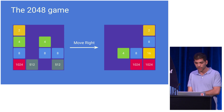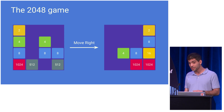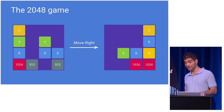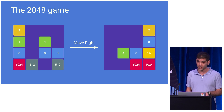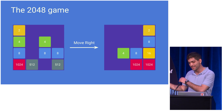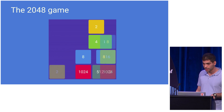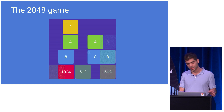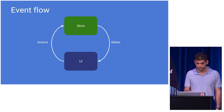I'm going to explain this idea by walking through an example implementation of the 2048 game. Unfortunately, I don't have enough time to explain the game. So if you don't know the game, just remember that the user picks a direction — left, right, up, or down — and all the tiles slide in that direction, and some of them merge. This is how it looks when I swipe right: the tiles slide to the right, and some tiles merge.